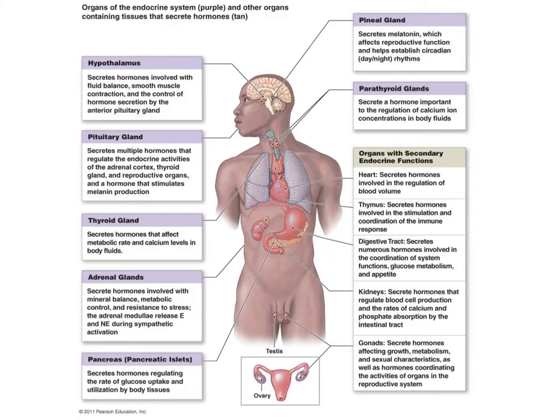In an anatomy and physiology class, studying the endocrine system would mean studying all of these endocrine glands, as well as their hormones, their responses, and their targets. But in AP Biology, we're going to simplify things a bit, mostly focusing on the hypothalamus, pituitary gland, and a couple of other key signaling pathways.